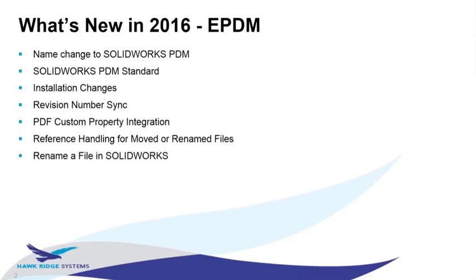Being able to rename a file in SolidWorks is a feature added to SolidWorks generally and also applies to SolidWorks PDM Professional. This allows you to go into the feature manager tree and rename the file — if you're working on an assembly and wanted to rename one of the components, previously you'd have to close down and rename it in Explorer or in EPDM in the Windows Explorer view. Now you can rename that file within SolidWorks.